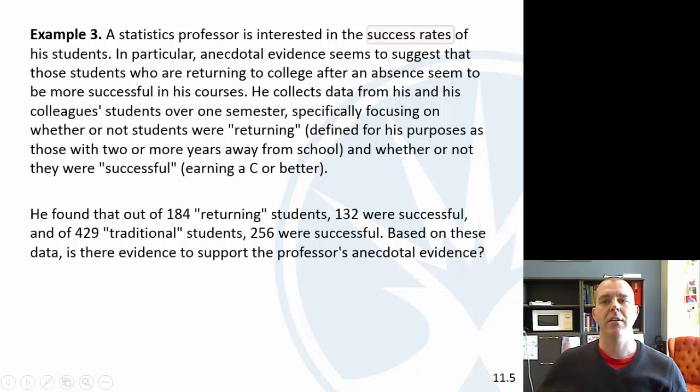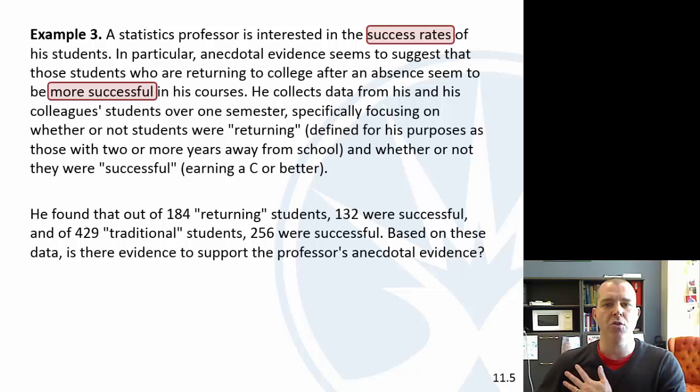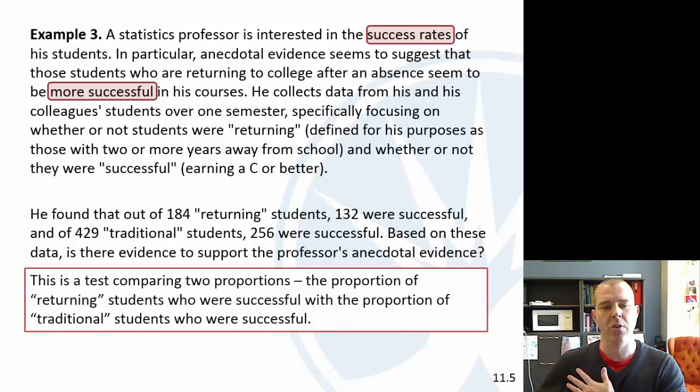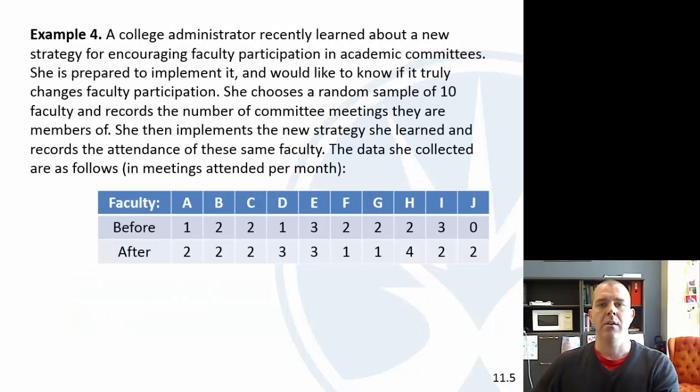Okay, so here we're looking at the success rates, right? And so we're looking at a rate or a proportion. So we're wondering here if those who return are more successful. So this is comparing two proportions, and our null hypothesis is that they'd be equal, and an alternative was that the proportion for returning students would be higher than the proportion for traditional students.